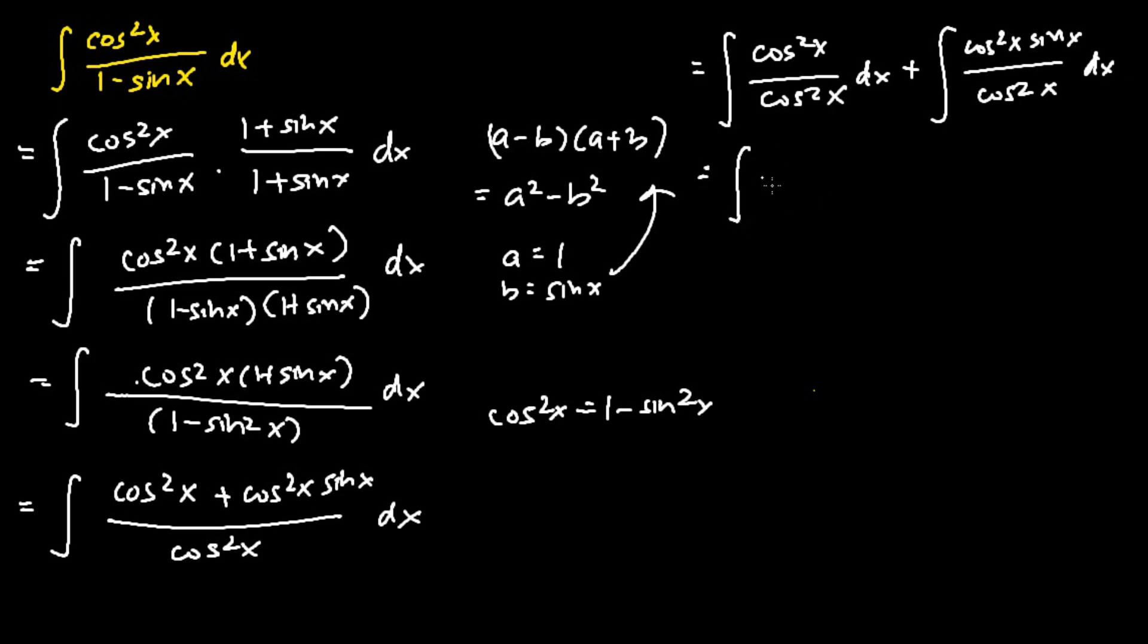My first integral can be simplified by dividing cosine squared x with cosine squared x to get 1, and the second integral will just be a cancellation, and then I get the integral of sine x dx.